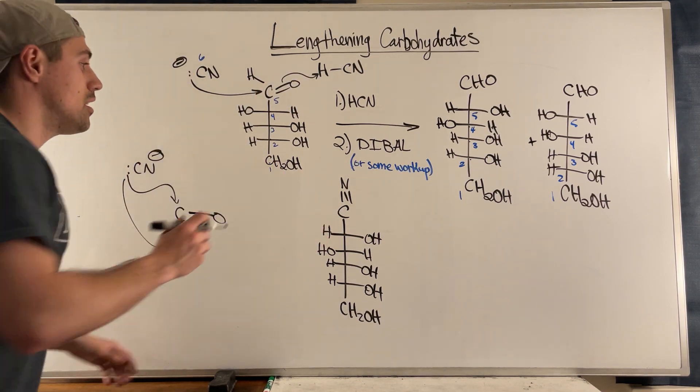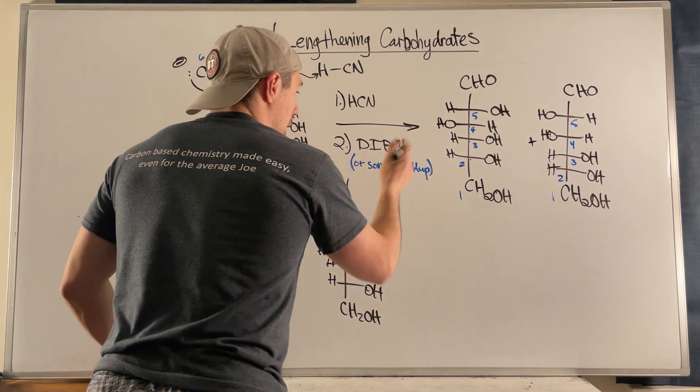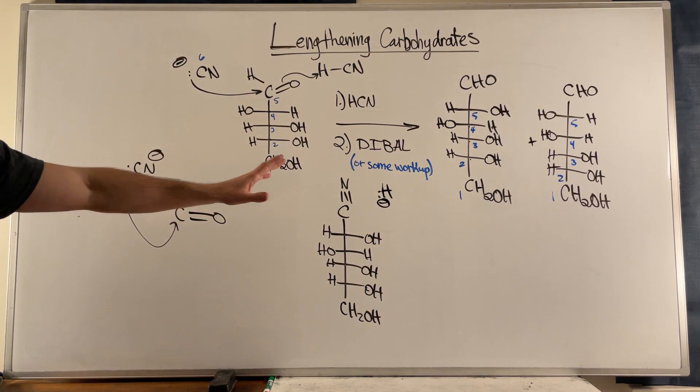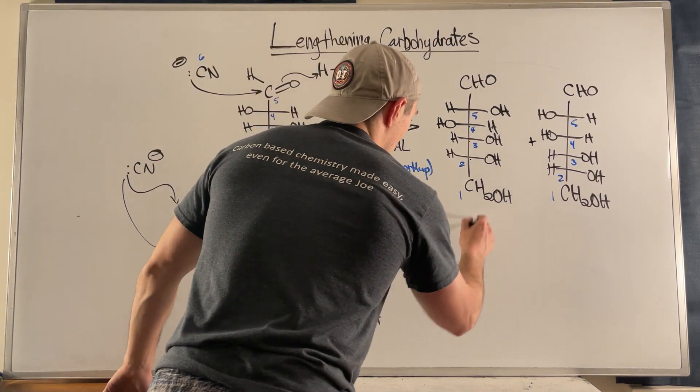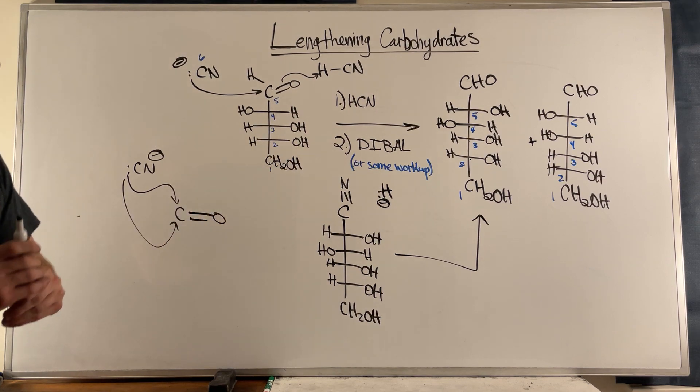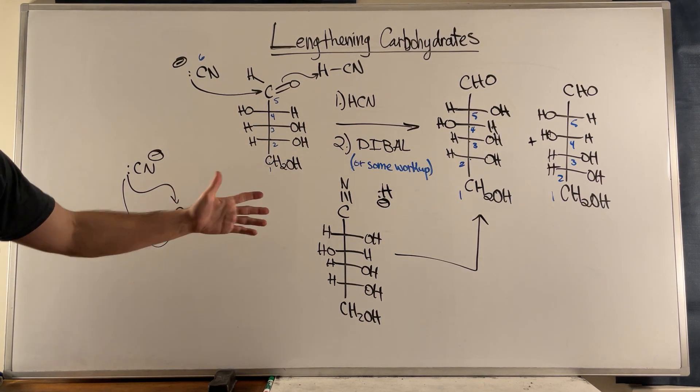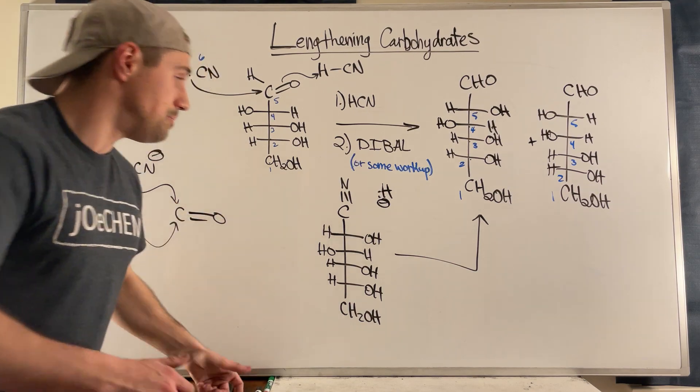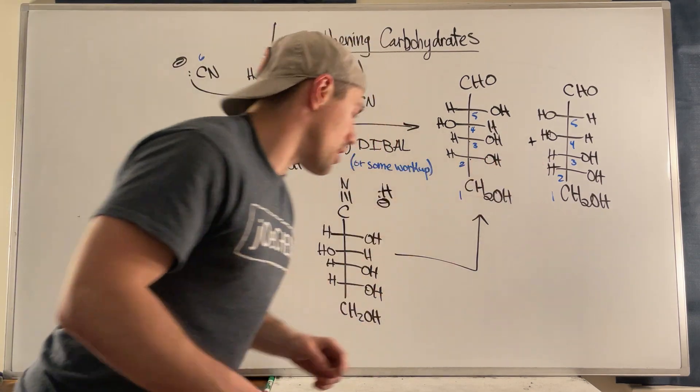We need to kind of reduce it down. So that's, you know, DIBAL would be your source of H minus, hydride for example. It'll attack, it'll reduce it, and you'll go from a nitrile to an aldehyde. And of course the same exact result would happen, but if this OH was on the left hand side, you would get this product over here.